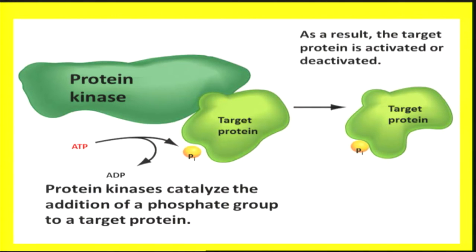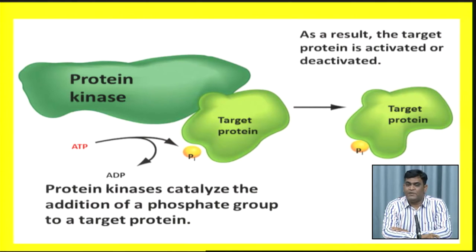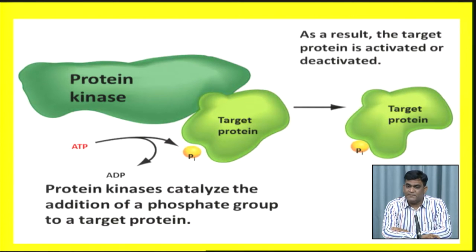Protein kinase phosphorylates its target protein, and when the target protein is phosphorylated, it becomes active and does its job. However, in some cases certain target proteins are dephosphorylated to become active, while in other cases phosphorylation may result in inactivation. In a nutshell, phosphorylation and dephosphorylation matter greatly as far as protein activity is concerned.